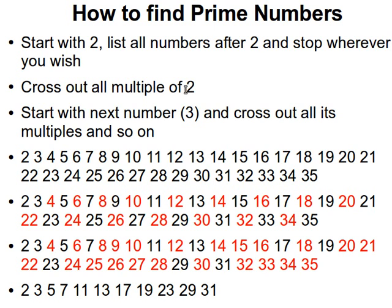Then we start with two and cross out all the multiples of two — four, six, eight, ten, twelve, fourteen, sixteen — all the way up to where we want to stop. After that, we go back to the beginning of the list and find the next number, which is three. We leave three alone, just as we left two alone, and cross out all the multiples of three all the way to the end. Then we go back again, take the next remaining number, leave it alone, and cross out its multiples.